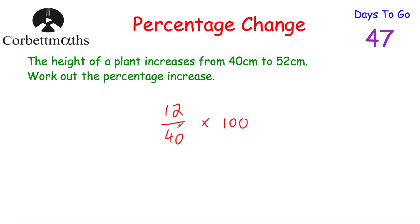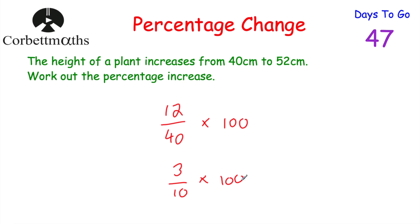Since this is a non-calculator question, I'm going to cancel down the fraction 12 over 40. Both 12 and 40 are divisible by 4 — they're both in the four times table. So 12 divided by 4 is 3, and 40 divided by 4 is 10, giving us 3 tenths, and we still have times 100. To work out 3 tenths times 100: 3 tenths is 0.3 as a decimal, so 0.3 times 100 is 30. Or you can do 100 divided by 10 equals 10, times 3 equals 30. So the percentage increase is 30%.